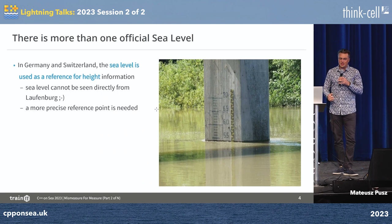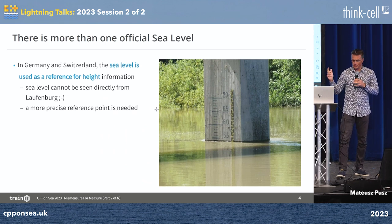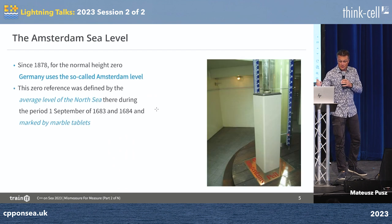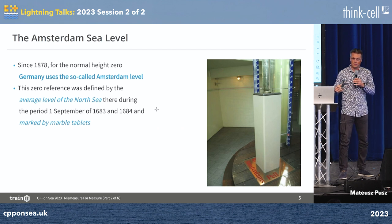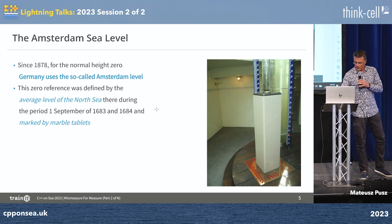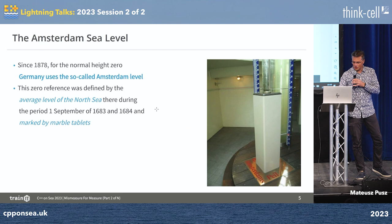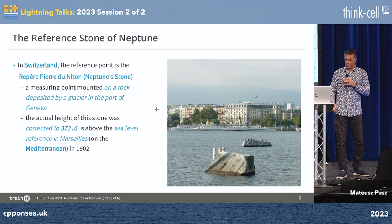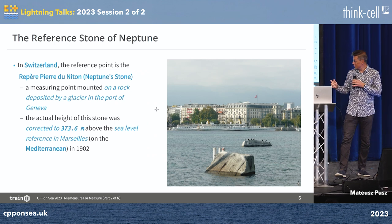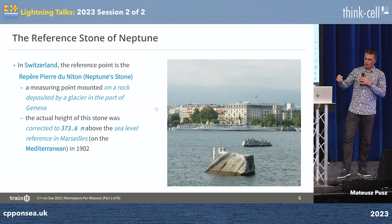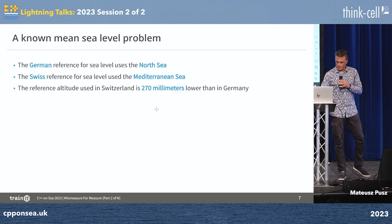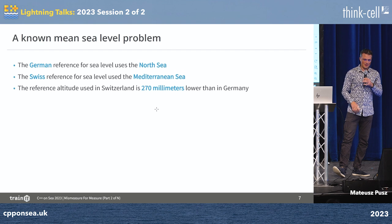It turns out that both Germany and Switzerland use mean sea level as a reference for altitude. But Germany uses the so-called Amsterdam sea level — the level of the North Sea in Amsterdam measured through the year 1683 — which is still the official reference zero in Germany. Switzerland uses another reference point called the Neptune Stone, a stone deposited by a glacier next to the port in Geneva, whose altitude was corrected in 1902 according to the sea level in Marseille, France, next to the Mediterranean Sea, to be 373.6 metres.